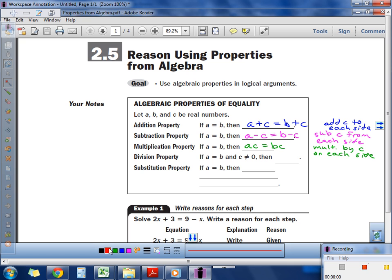Next one is pretty obvious. Division property. We can divide by C on each side. As long as C is not zero. Why do we say C can't be zero? You would get undefined. You cannot divide by zero. So divide by C on each side.